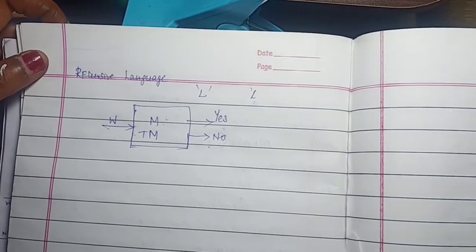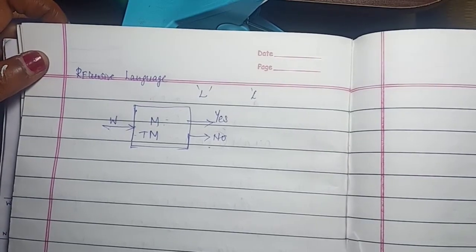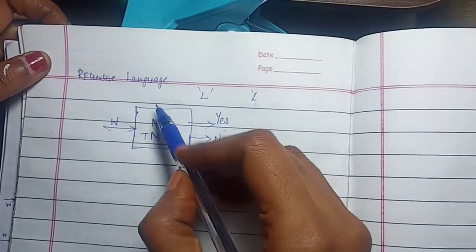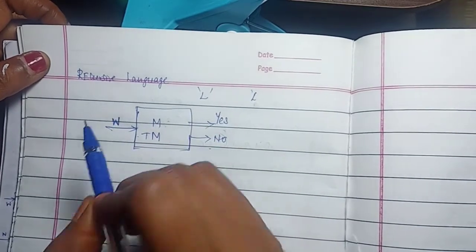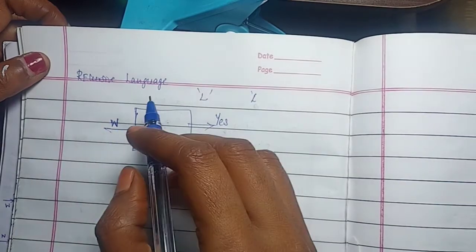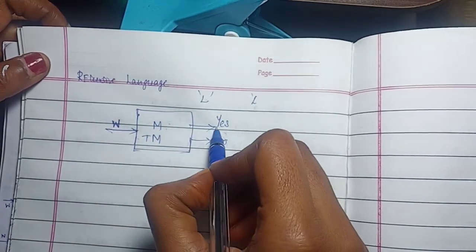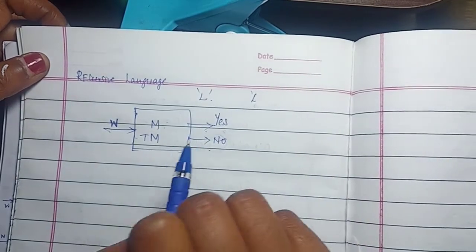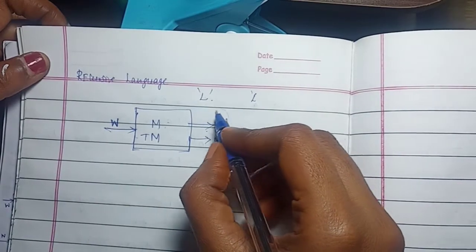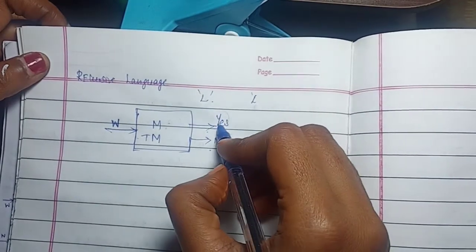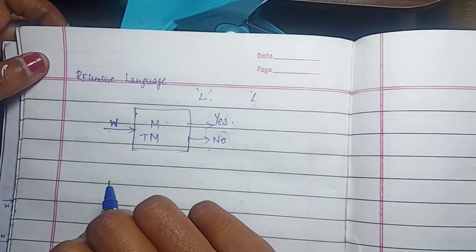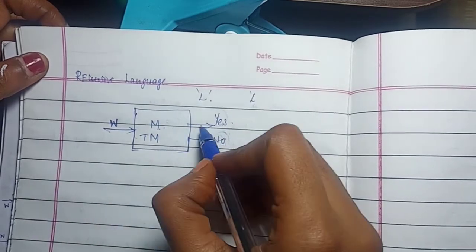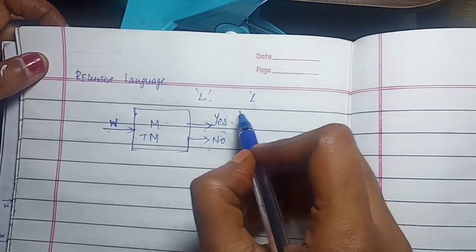Welcome to the session. We are going to see about recursive language. A language is recursive if there exists a Turing machine M for a particular input W such that the Turing machine accepts the strings that are in the language L and rejects the strings that are not in the language L. If the string W is in L, then machine M accepts it and the Turing machine will halt.